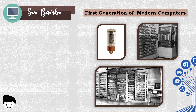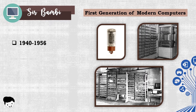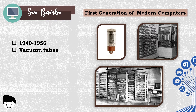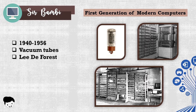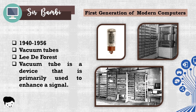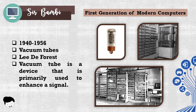The first generation of computers were established between 1940 and 1956. Vacuum tubes for circuitry and magnetic drums were used on first generation computers. The vacuum tube was developed by Lee DeForest. A vacuum tube is a device that is primarily used to enhance a signal by manipulating electron movement in an evacuated place.